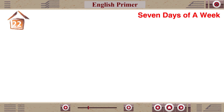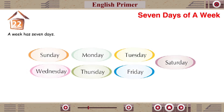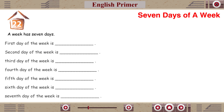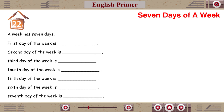Chapter 22: Seven Days of a Week. A week has seven days: Sunday, Monday, Tuesday, Wednesday, Thursday, Friday, Saturday. The first day of the week is Sunday. The second day is Monday. The third day is Tuesday. The fourth day is Wednesday. The fifth day is Thursday. The sixth day is Friday. The seventh day is Saturday.